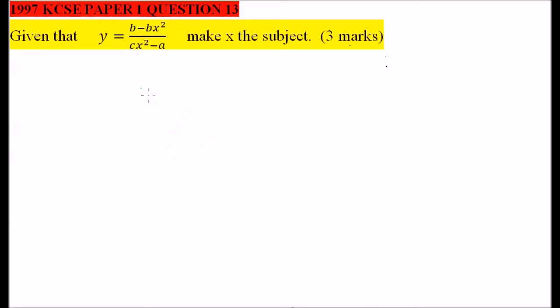So we first of all start by cross multiplying. So we have ycx squared, we multiply, cross multiply, and ya is equals to b minus bx squared.